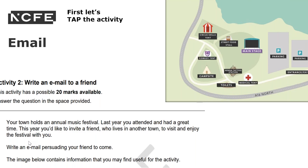So let's have a look at this activity. If you watched the previous videos, we would look at TAP-ping the text. So what is this text type? We know it's an email. We'll have a look and we'll see who the audience is and what the purpose is.